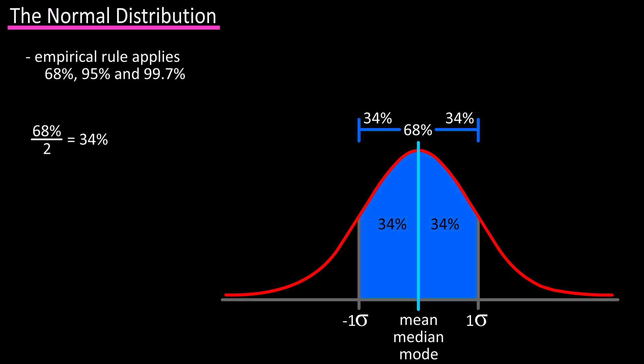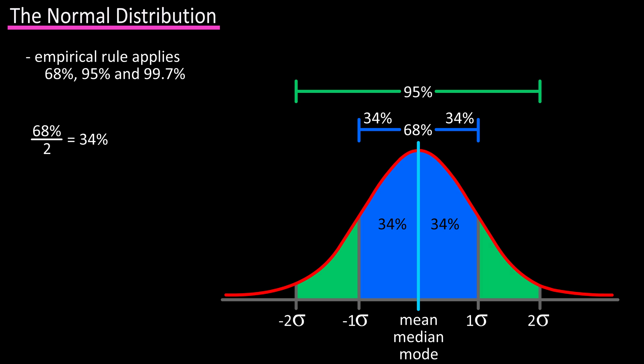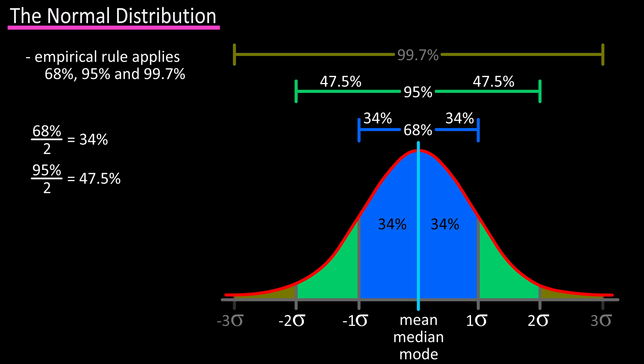The empirical rule also states that about 95 percent of the area under the curve lies within two standard deviations of the mean — two standard deviations to the left and two to the right. It also states that about 99.7 percent of the area under the curve lies within three standard deviations of the mean.